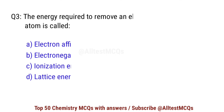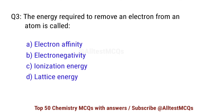Question number 3. The energy required to remove an electron from an atom is called? Correct option is C: ionization energy.